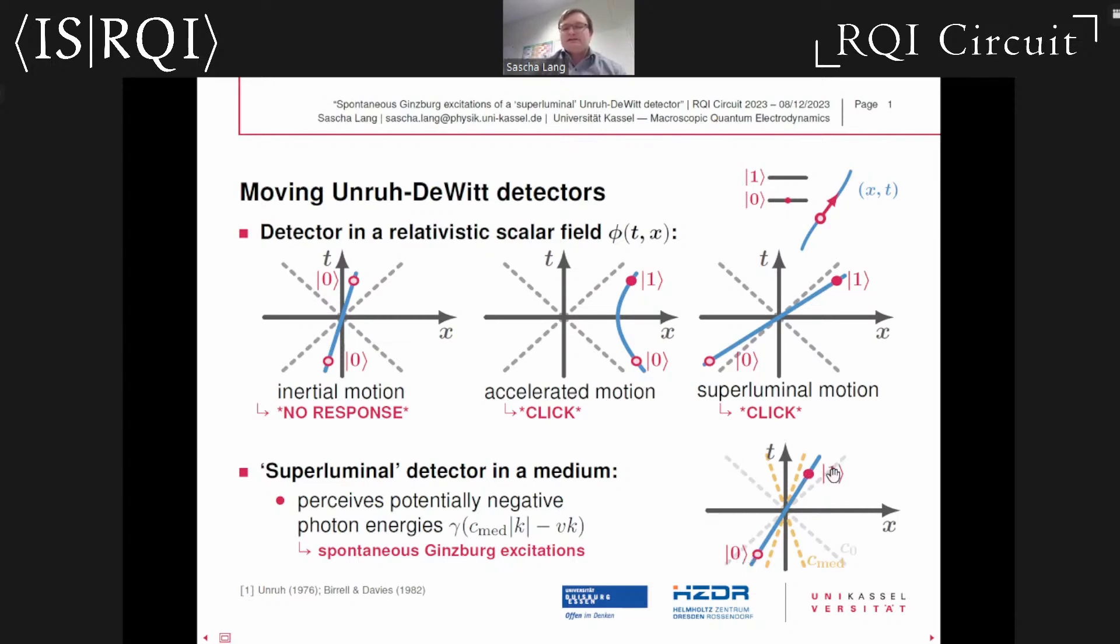Those particle detectors turn out to have a small chance to get spontaneously excited. Let's consider the situation from the perspective of such a moving detector. The detector perceives the surrounding field modes to be Lorentz boosted in energy, and if the velocity exceeds the phase velocity in the medium, then those energies associated with surrounding photons are negative. Creating a photon in such a negative energy mode sets free energy, and this energy can be used to excite the atom. The mechanism is sometimes called the Ginzburg effect, and by Ginzburg himself it was called the anomalous Doppler effect.